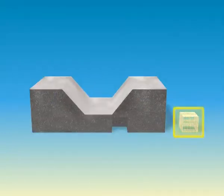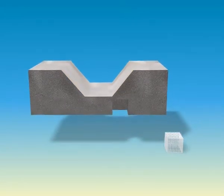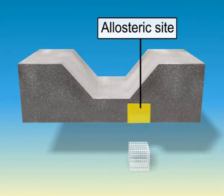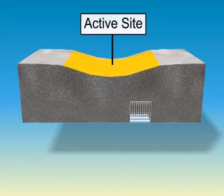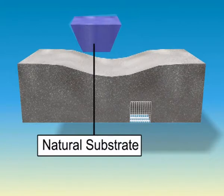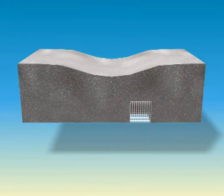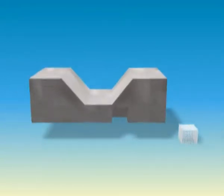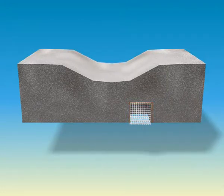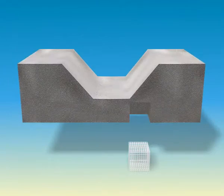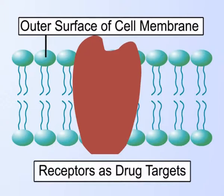Some drugs, however, do not bind to the enzyme's active site but bind to a different site in the enzyme which is called the allosteric site. This binding of the drug at the allosteric site changes the shape of the active site of the enzyme in such a way that the natural substrate cannot recognize it. So any change in the shape of the active site will inhibit its combination with substrate. If the bond formed between the enzyme and the drug is a strong covalent bond which cannot be broken easily, then the enzyme is blocked permanently. The body then degrades the enzyme-drug complex and synthesizes the new enzyme.